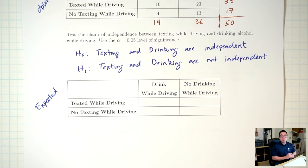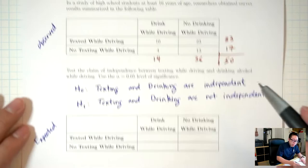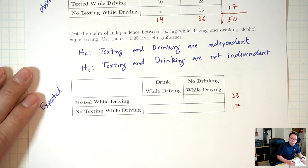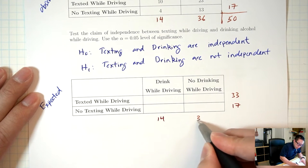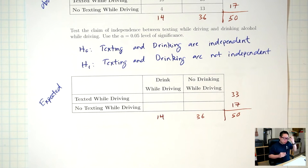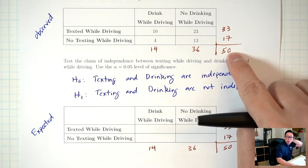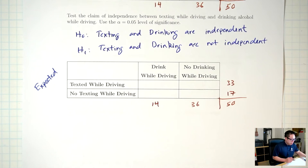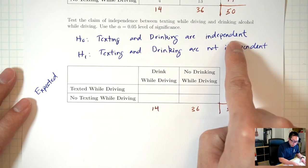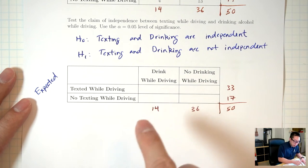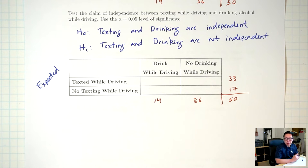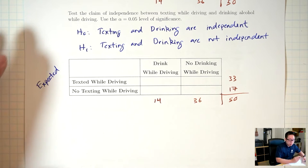Now, how do I find the expected numbers? For my expected numbers, I want the same row totals, the same column totals, and the same grand total as the original table. I want to fill in this table so that, assuming texting and drinking are independent, what should these numbers be? To figure that out, I need to go back to the definition of independence that we covered in unit two.